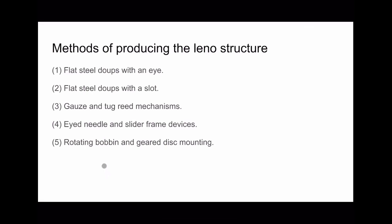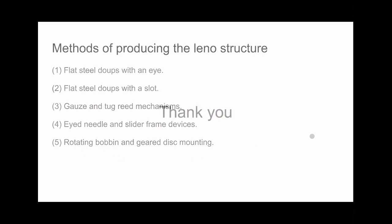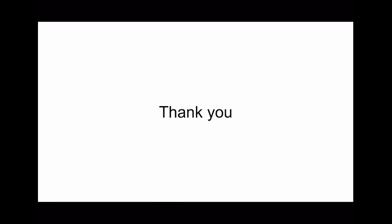Now the methods of production of lino structures — there are mainly five methods. First is the flat steel doup with an eye. Second is the flat steel loop with a slot. Third is the gauze and tug reed mechanism. Fourth is the iron needle with slider frame devices. Fifth is the rotating bobbin and gear disc mounting — this fifth method is only used for salvage manufacturing and is not a commercial method for manufacturing lino fabrics as a whole. Thank you friends, that's all for now. In the next video we will discuss one method of production of lino fabric in detail.